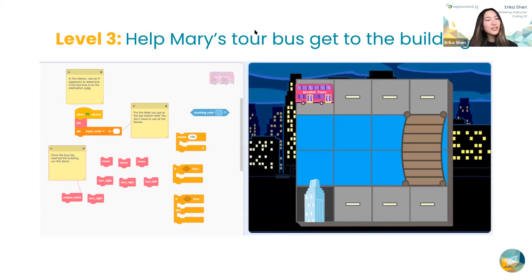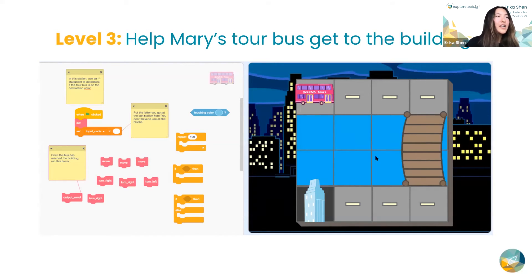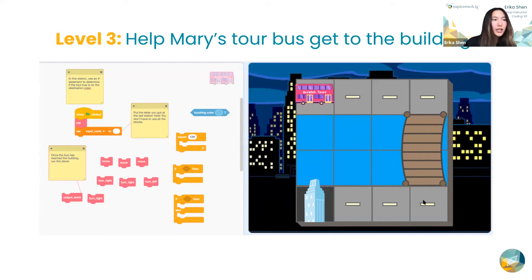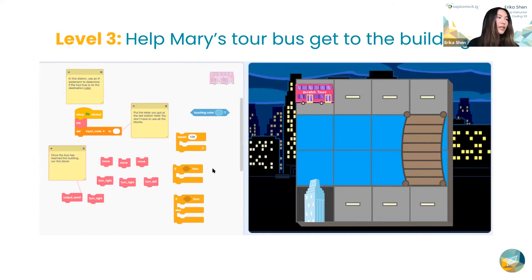That is what level three is about. The bus has to go over a bridge, and you're going to use if-then statements to let the bus know when it should turn so it can get to the building. Scratch makes it pretty intuitive so you guys can hopefully understand how conditions work.